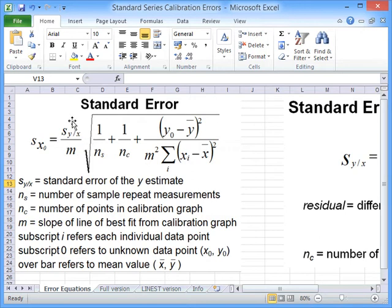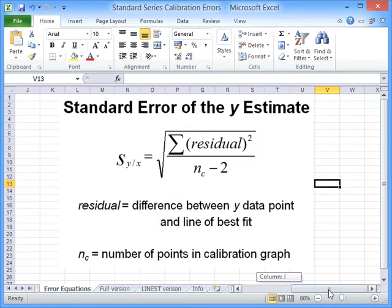One of these is the standard error of the Y estimate. If we just move over here we can see that explained in a little bit more detail. The standard error of the Y estimate, the Sy of X, is the square root of the sum of the residual squared divided by the number of calibration points minus 2. And the residual is the difference between a Y data point and the line of best fit.